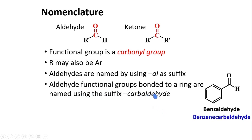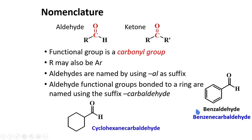Aldehyde functional groups bonded to a ring are named using the suffix '-carbaldehyde.' So benzaldehyde can also be named benzene carbaldehyde. For this type of compound, the aldehyde group is attached to a cyclohexane ring, so it's called cyclohexane carbaldehyde.